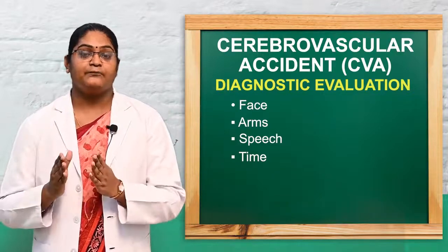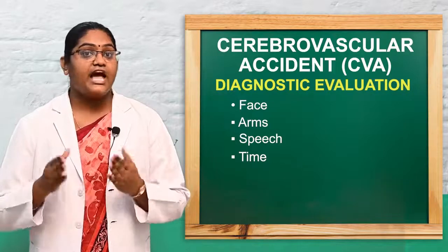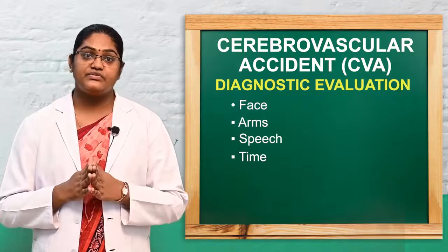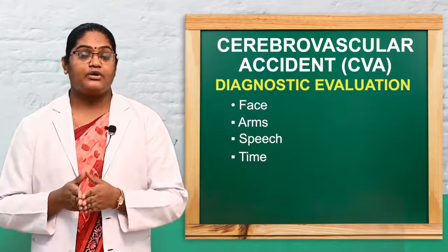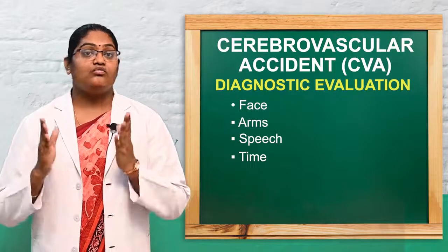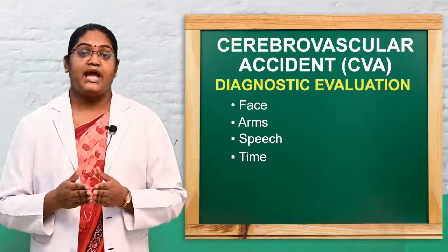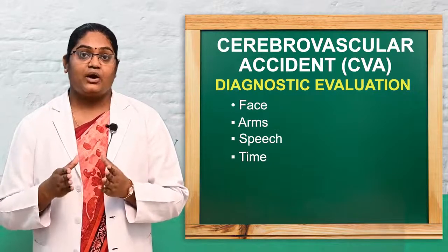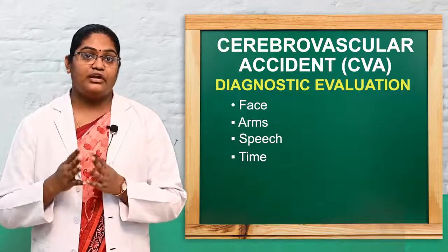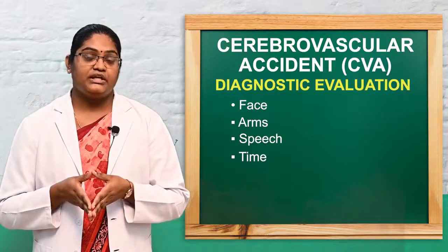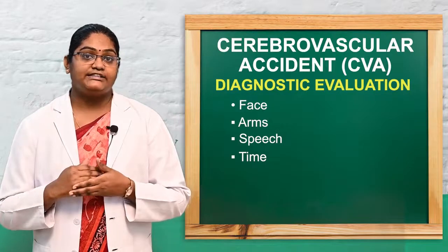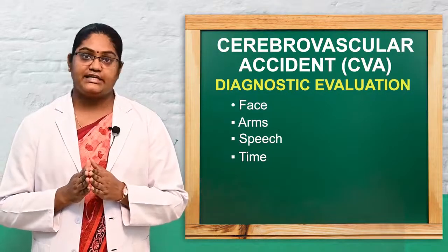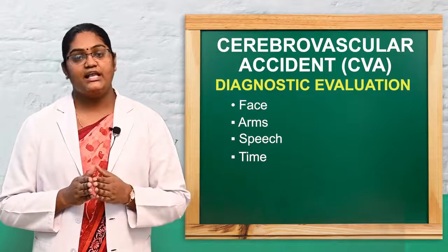F stands for Face — ask the patient to smile and assess whether one side of the face is drooping. A stands for Arms — ask the patient to raise both arms and assess whether one arm drifts downward. S stands for Speech — ask the patient to repeat a simple sentence and assess for slurred speech or difficulty speaking. T stands for Time — if any of these signs are observed, immediately call emergency services.